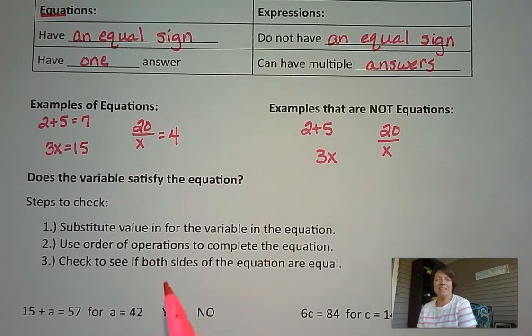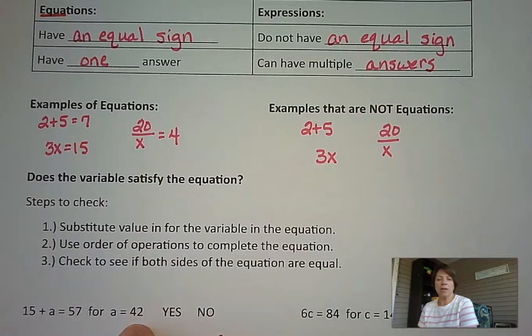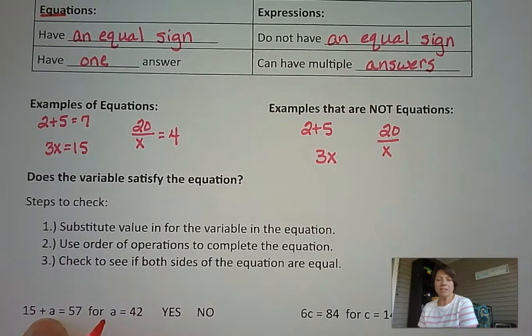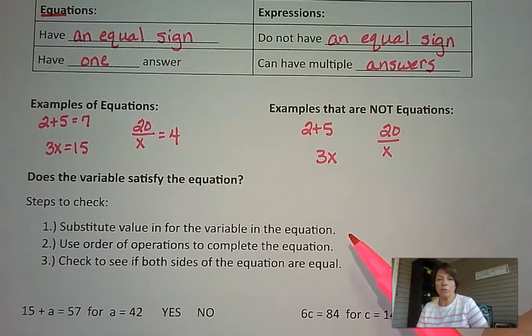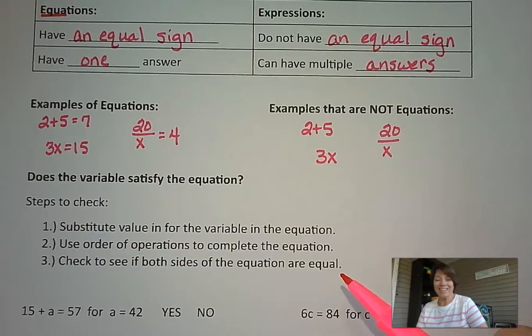So our job in this lesson is to be given a value for our variable and to substitute that in to our equation and then check to see if it makes the equation true. So here are our steps: substitute a value in for the variable in the equation, use the order of operations to complete the equation, and then check to see if both sides of the equation are equal.